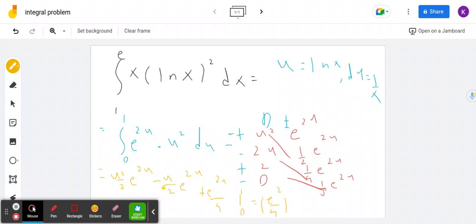And then minus, when we plug in 0, this becomes 0, this becomes 0. We just get 1 fourth. So minus 1 fourth. So basically, the answer is e squared minus 1 over 4.